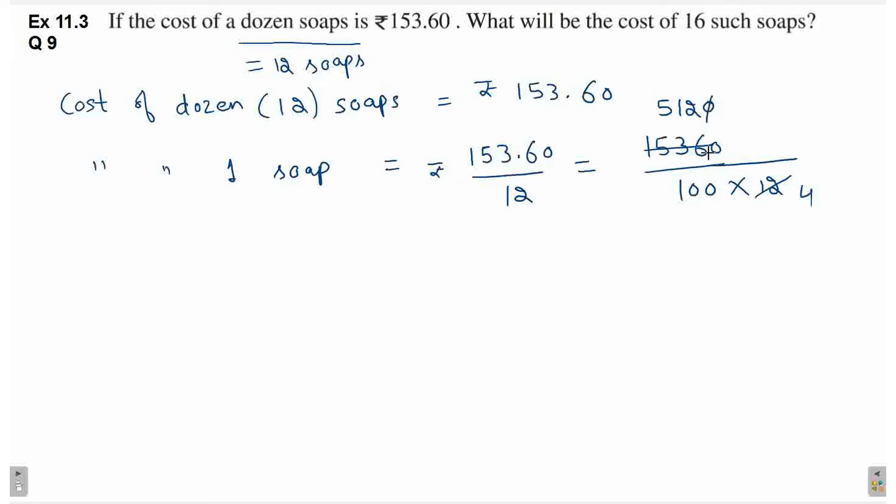Ab ye joh last wala 0 hai, ye 100 ke last wala 0 ke saat cancel ho jayega. Ab 512 mujhe dikh rahe hai ki ye 4 ke saat divisible hai. Agar aap ko koji confusion hai, toh aap 2 ke saat bhi donoh numbers ko divide karna start kar sakti ho. 4, 1s are 4. Yahaan pe kitna aayega? 4, 1s are 4. 1 bacha. Saat mein aaya 1.